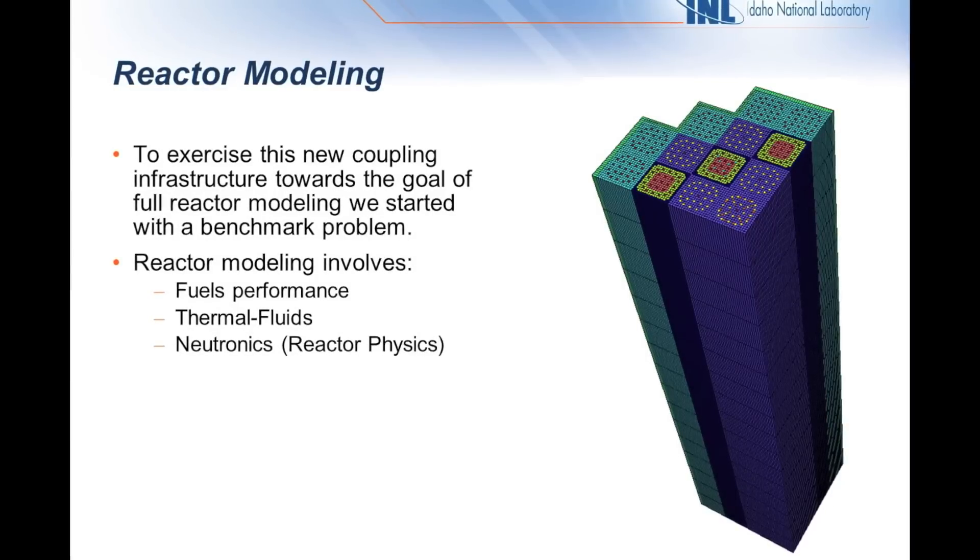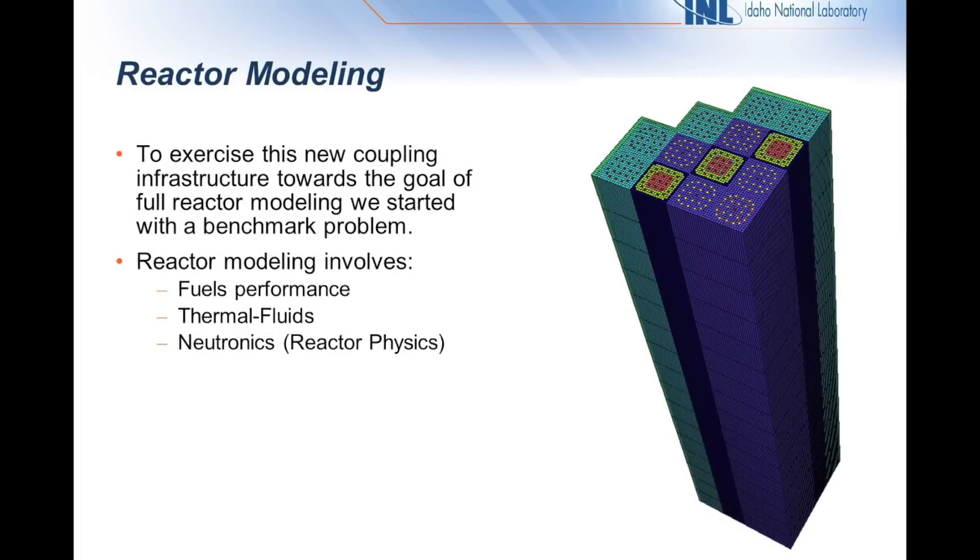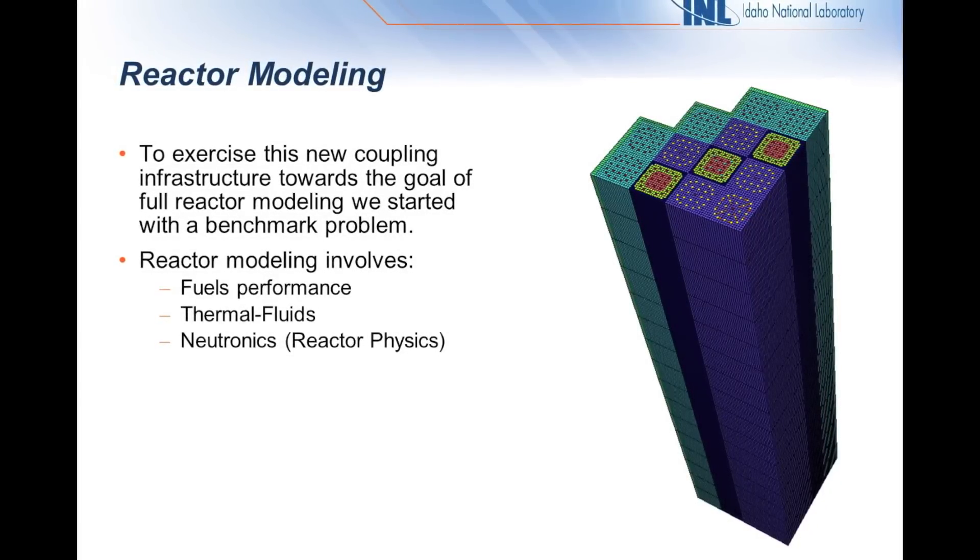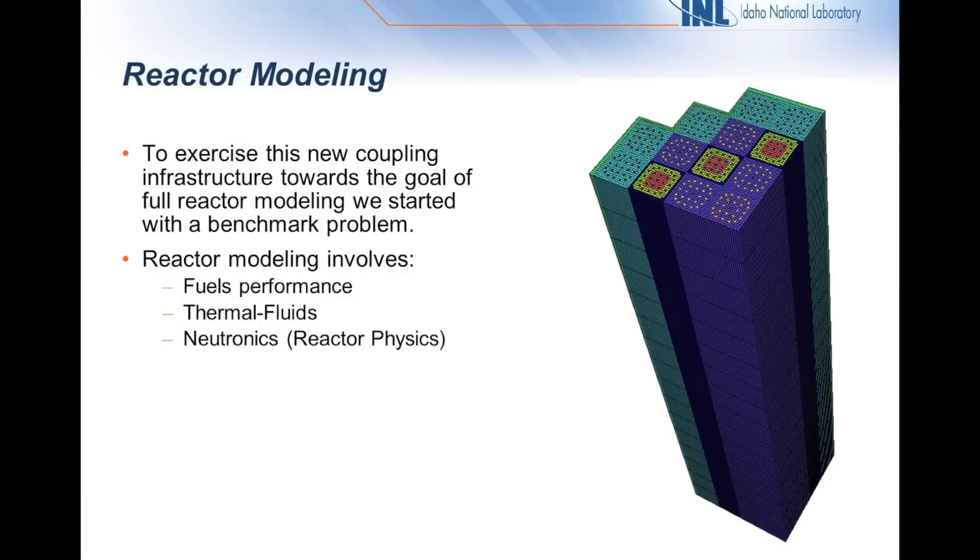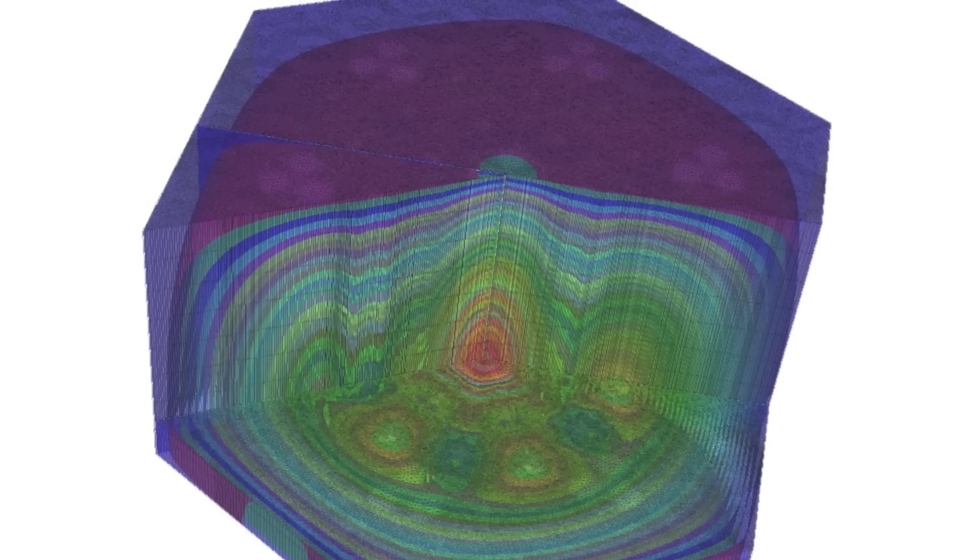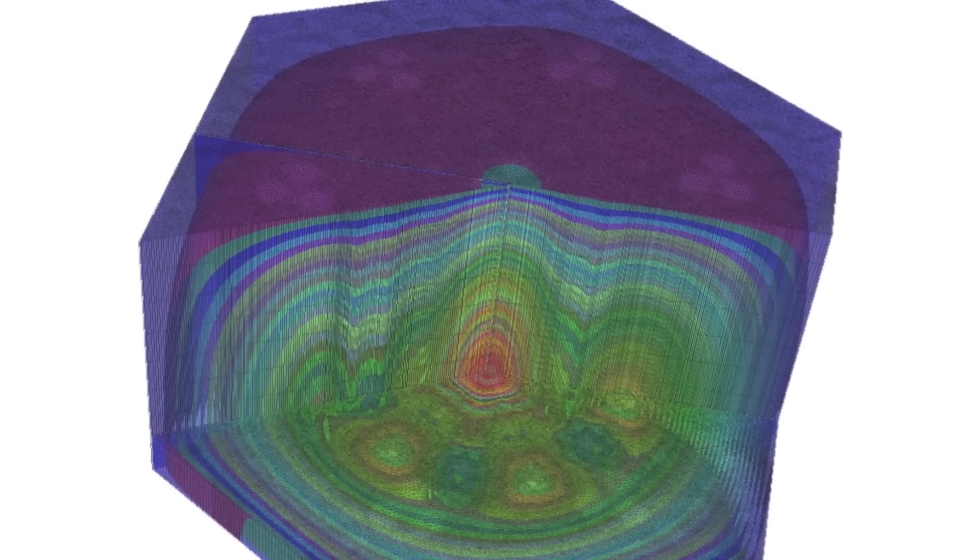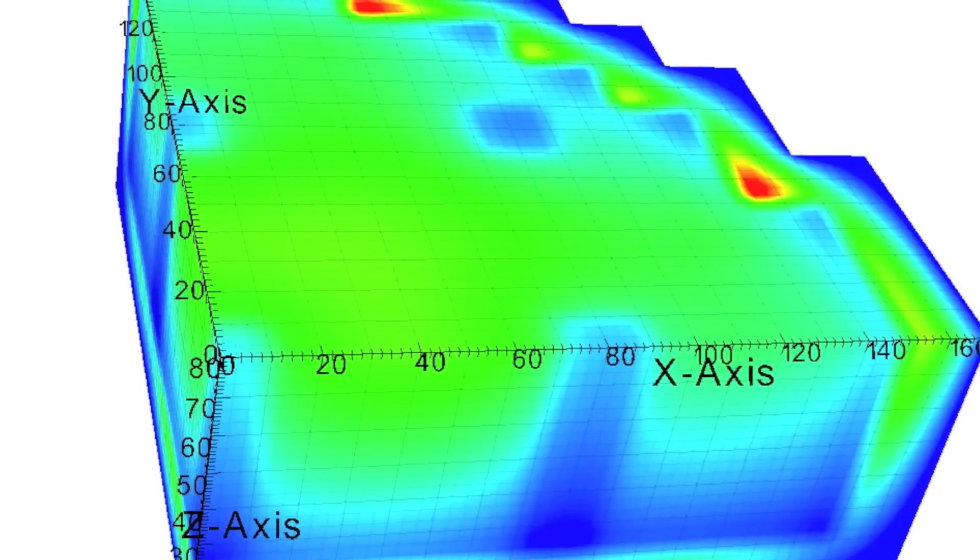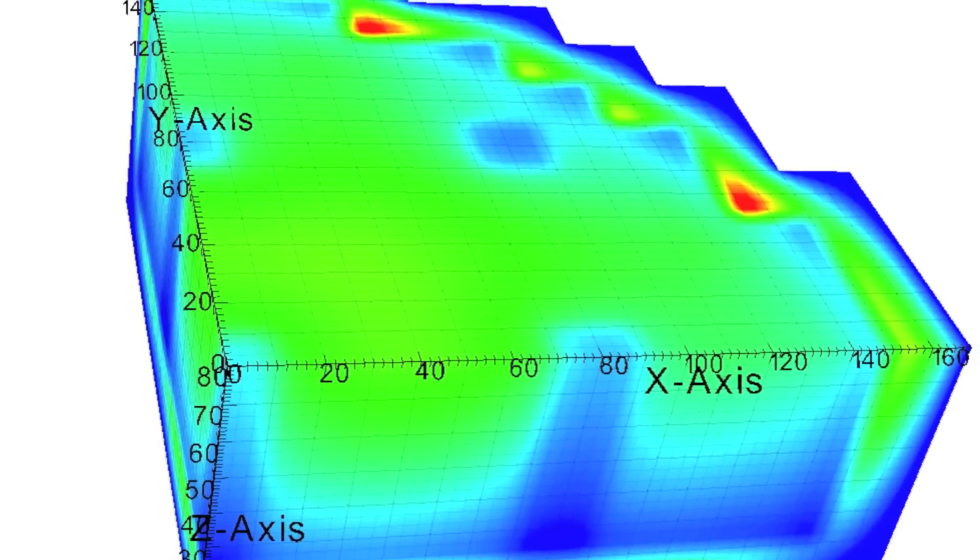This first simulation that we're going to look at is on a small benchmark nuclear reactor core. We've modeled a quarter of the core, and that's what you see on the left side of your screen. The block on the left side of the screen is actually showing the neutron simulation as done by Rattlesnake. Rattlesnake is our high-fidelity nuclear simulation tool for doing transport neutronics.